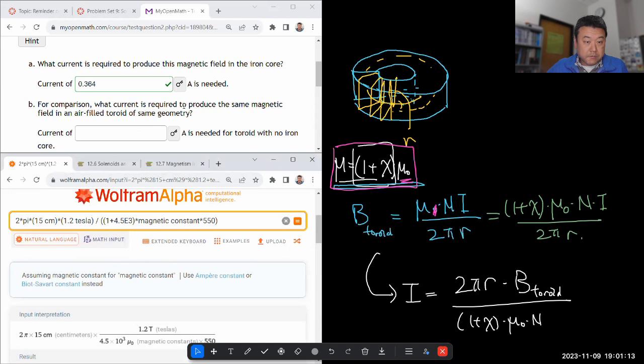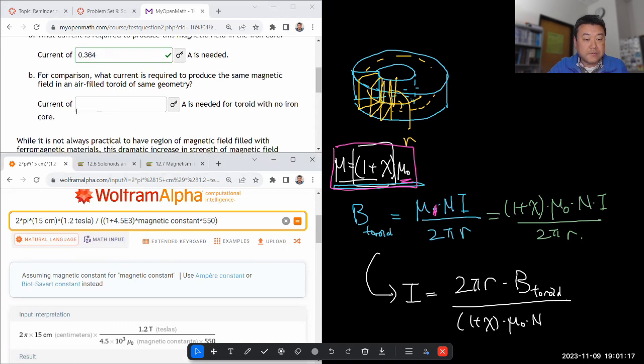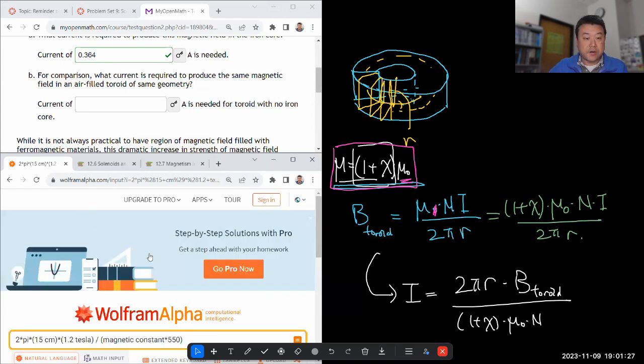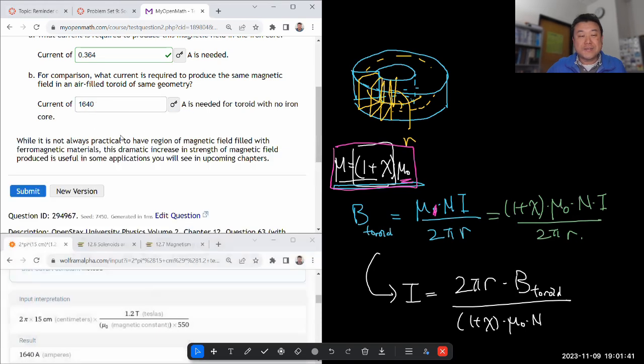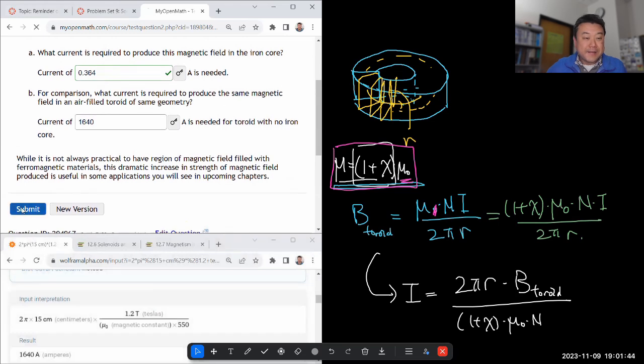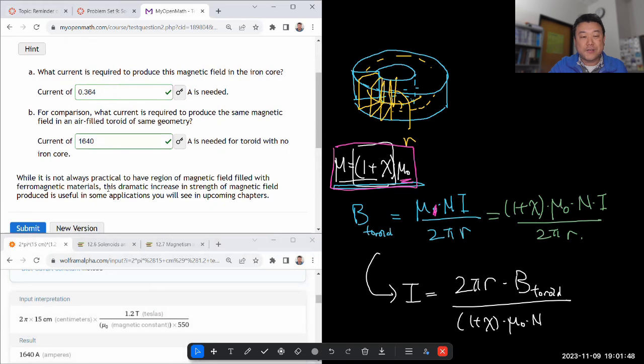So for comparison, what current is required to produce the same magnetic field? Yeah, air-filled toroid of the same geometry. So that would be where I get rid of this modification that comes from the ferromagnetic material. Then you get the currents that are in thousands of amperes, 1640 amperes. I don't think I know any experimental device that can produce that much current. I'm sure someone can build a special purpose device that can do that. But like your home appliances are not producing that much current. Like if you had that much current even at one volt difference, it's using up same energy as your microwave running. It's a huge amount of current.